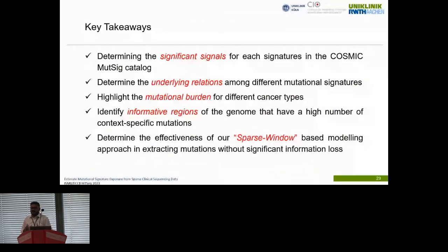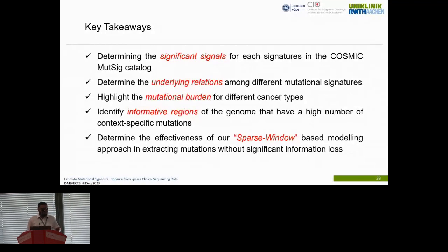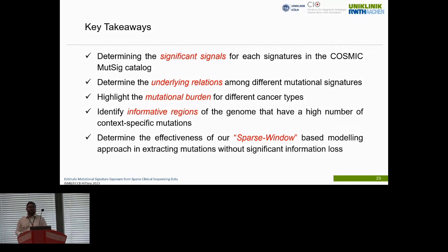Key takeaways: We are determining significant signals for each signature in the COSMIC mutational catalog. We have determined the underlying relations among different mutational signatures, and highlighted the mutational burden — though there is still work to do in this area. We identified informative regions of the genome with high numbers of context-specific mutations. We also determined the effectiveness of the sparse window-based modeling approach in extracting mutations without significant information loss, though we need more experimentation to reach an optimal solution.